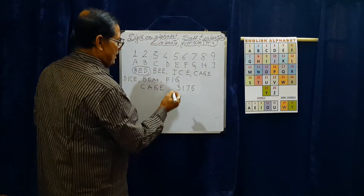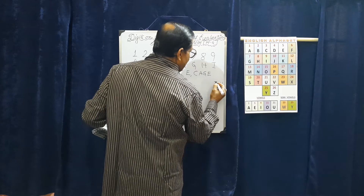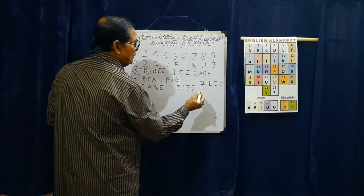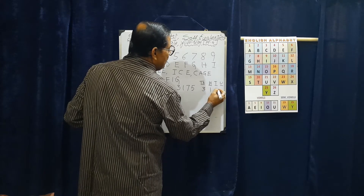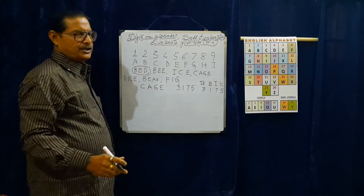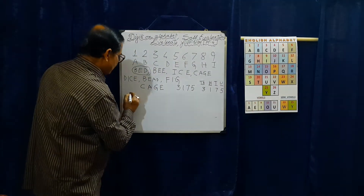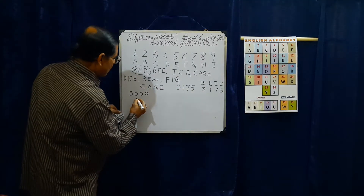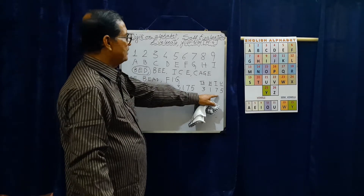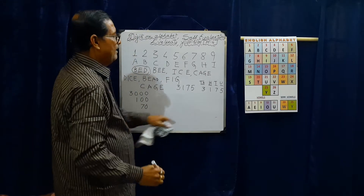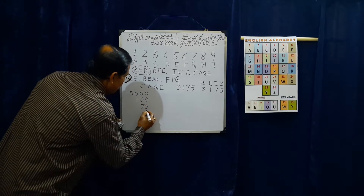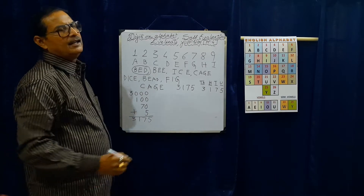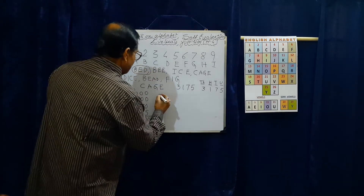Writing by place value — units place, tens place, hundreds place, thousands place — we get 3, 1, 7, 5, which is three thousand one hundred and seventy-five. The place value of 3 is 3000, place value of 1 is 100, place value of 7 is 70, and place value of 5 is 5. Adding them gives 3175.